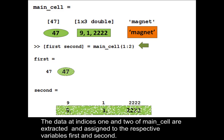The data at indices 1 and 2 of main_cell array are extracted and assigned to the respective variables first and second.